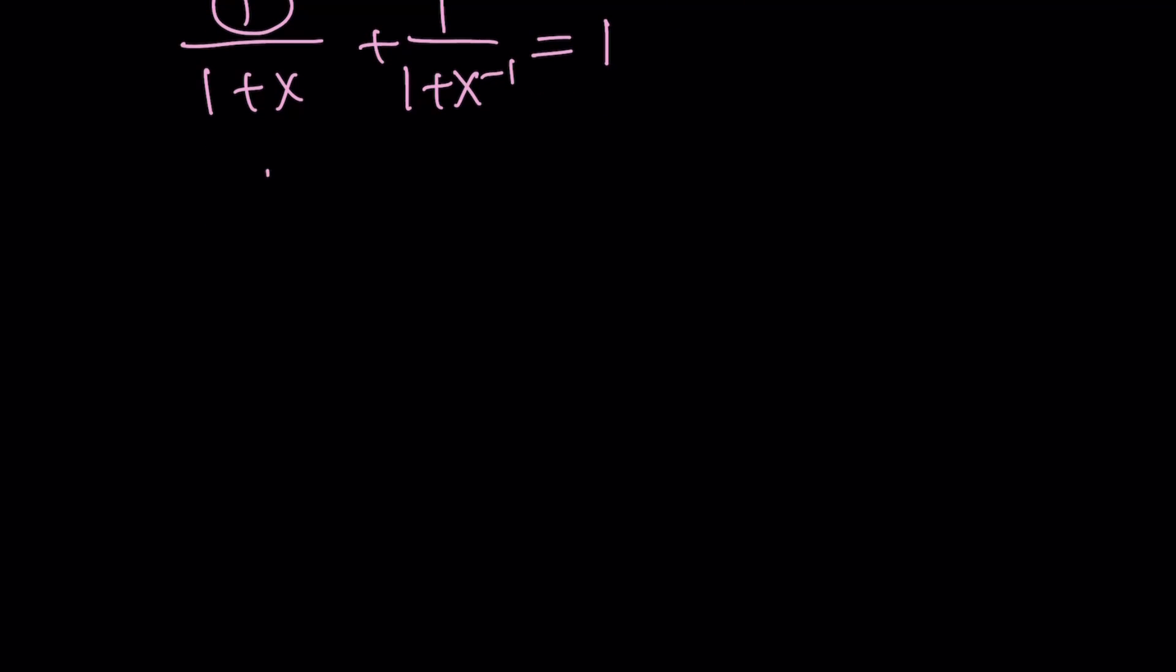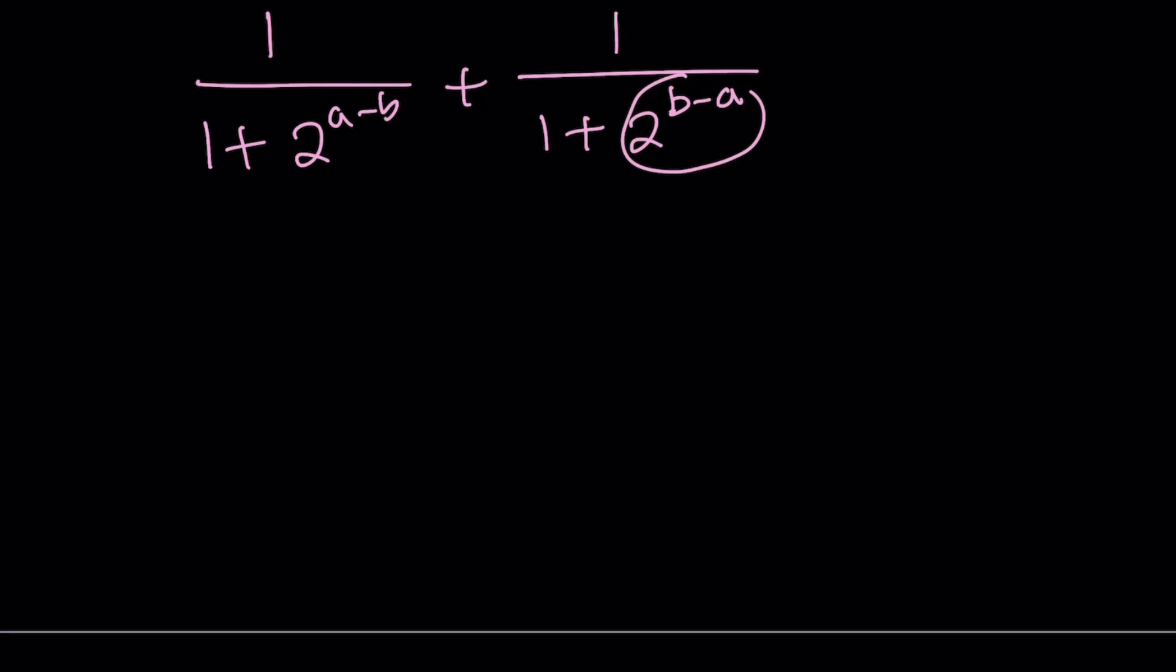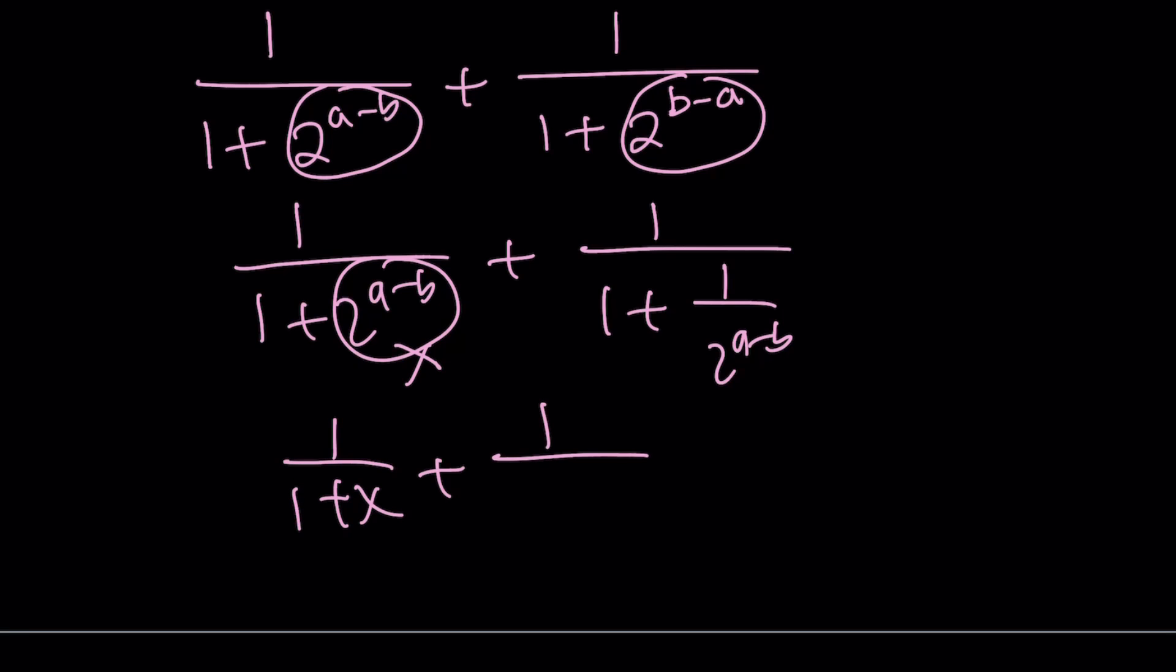What happens if you have a problem like this? And I've seen problems like this before. Something like 1 over 1 plus 2 to the power of a minus b plus 1 over 1 plus 2 to the power of b minus a. So one thing to notice here is that as a shortcut, notice that 2 to the power of b minus a is just the reciprocal of 2 to the power of a minus b. So you can just go ahead and write it like this. And then you can just proceed. Just call this x. And you're going to get 1 over 1 plus x plus 1 over 1 plus 1 over x. And the rest is as follows.